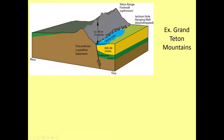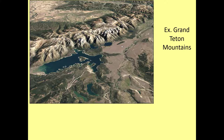You can see this really nicely on a physiographic aerial shot of the Tetons. Here's Jenny Lake and here is where the Teton Fault comes into contact with the surface. The footwall goes up and the hanging wall drops down.